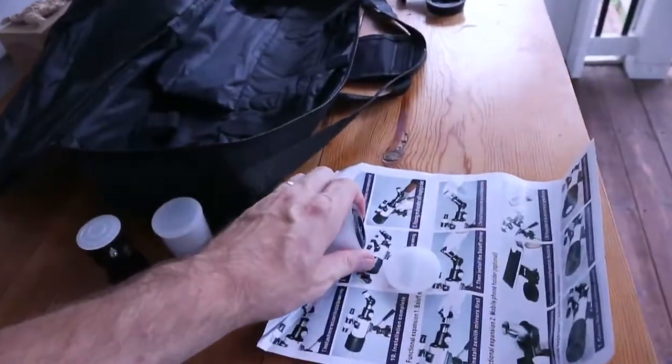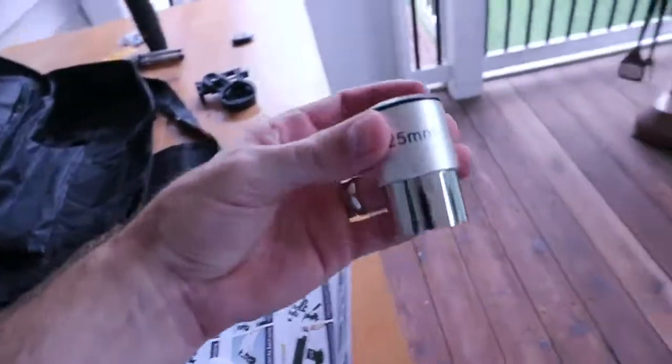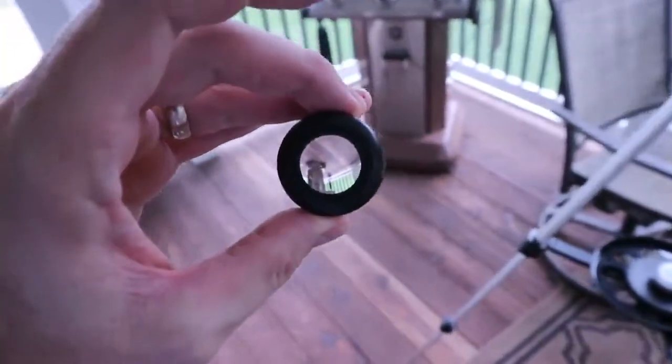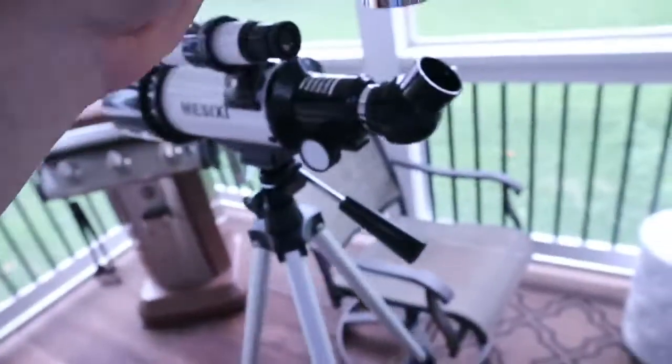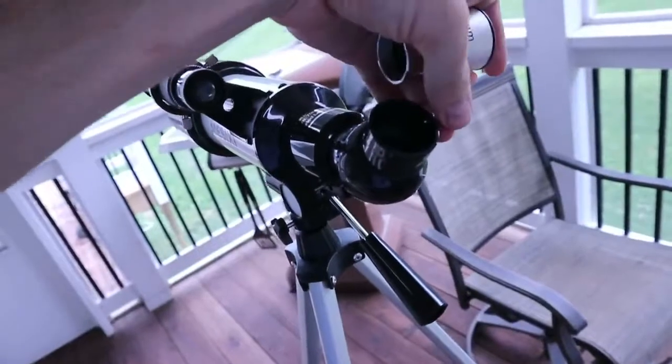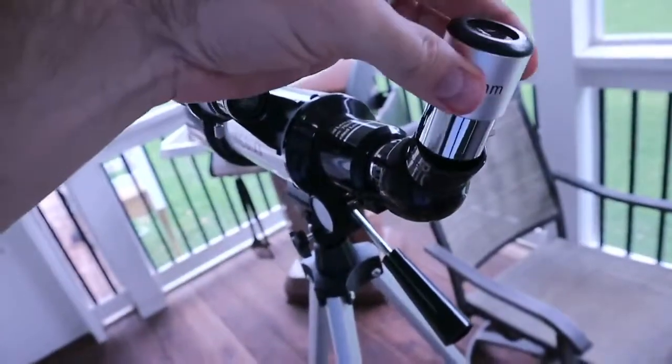Now once your Zenith mirror is installed, you're going to take out your eyepiece and of course start with the 25 millimeter and be quite careful. Don't touch the lens with your fingers and you just slide it into the Zenith mirror there. You might have to unscrew that bolt. That's what locks it down once it's in place.